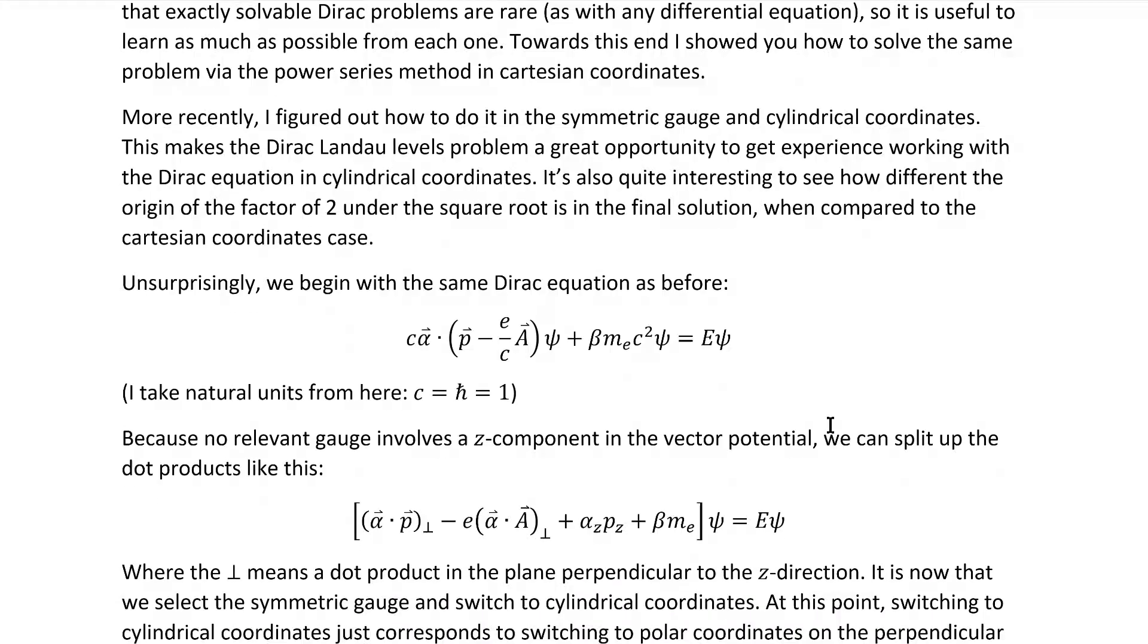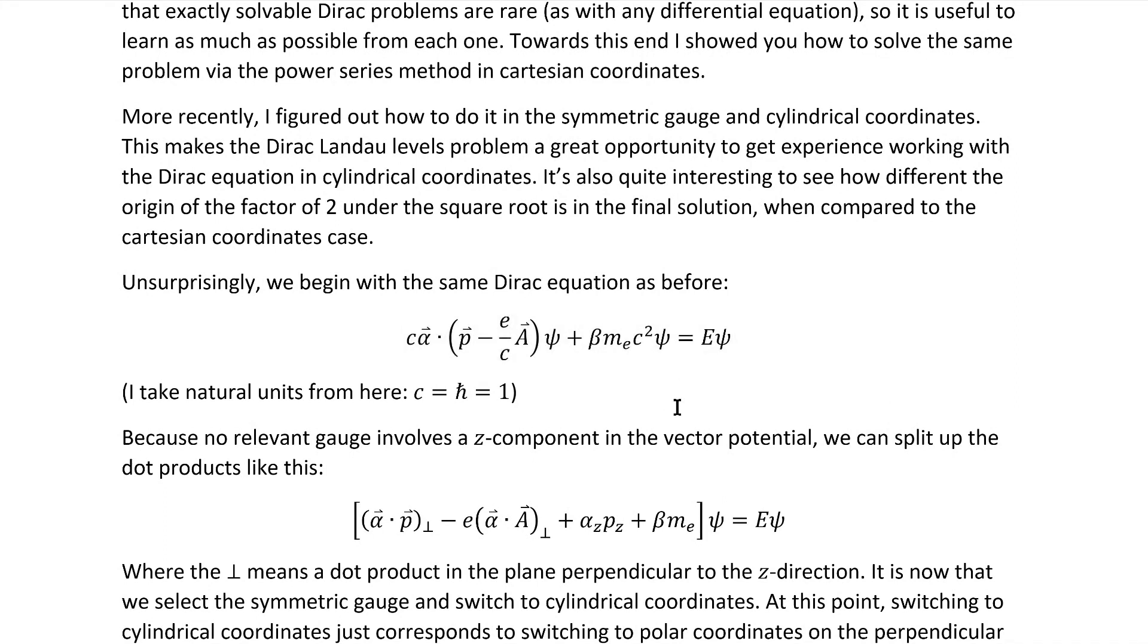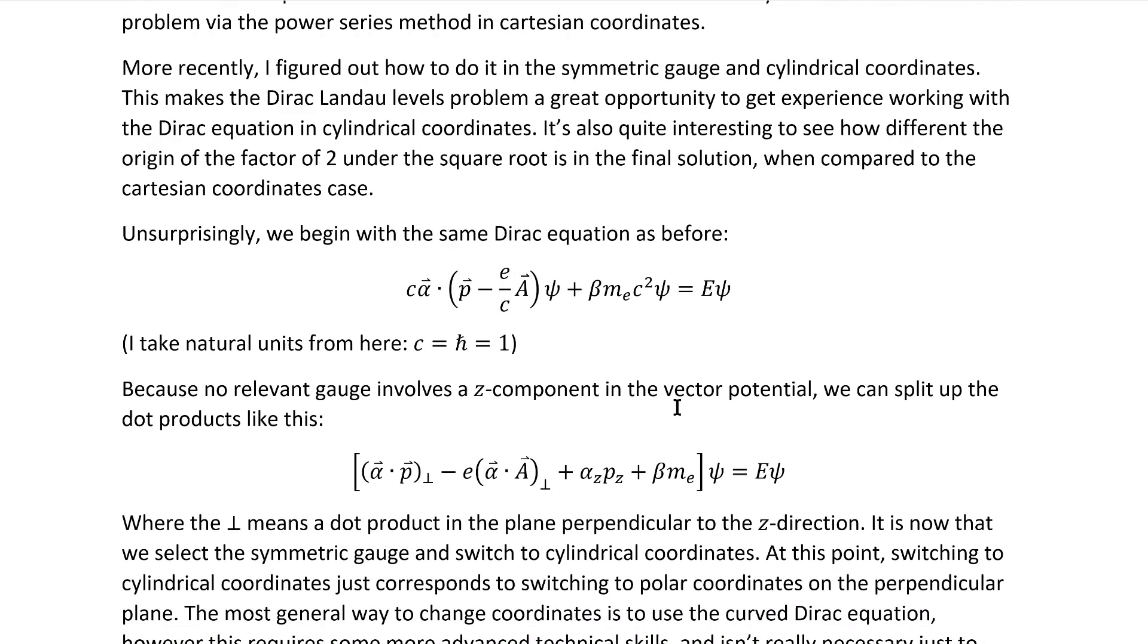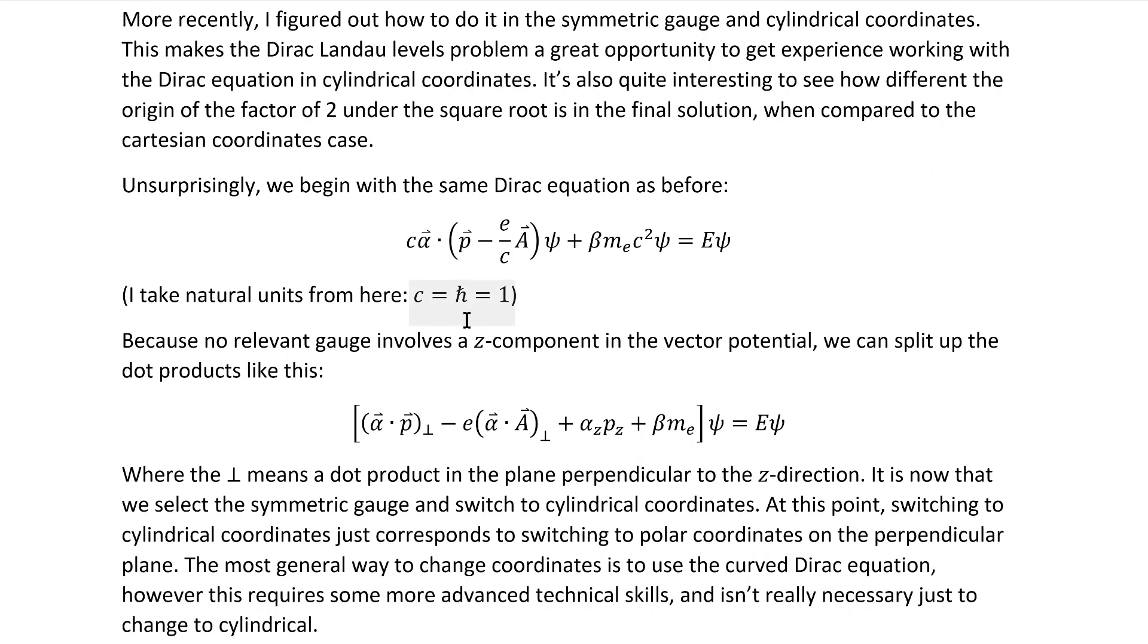Unsurprisingly, we begin with the same Dirac equation as before. I'll take natural units for most of this video, at least until I restore h-bar and c at the very end. Now, because no relevant gauge involves a z-component in the vector potential, we can split up the dot products like this,